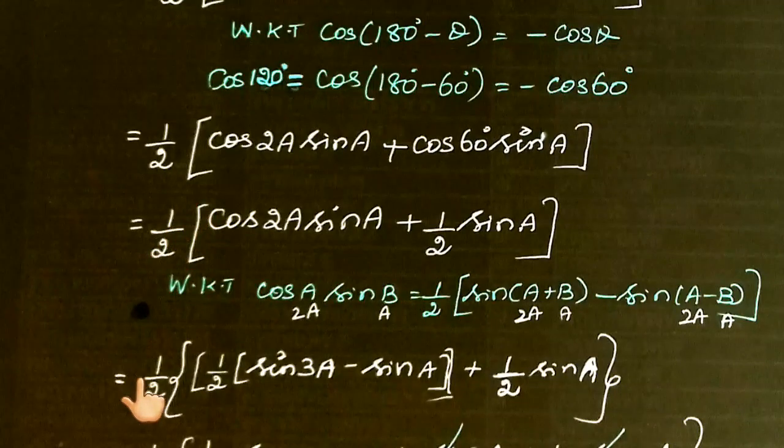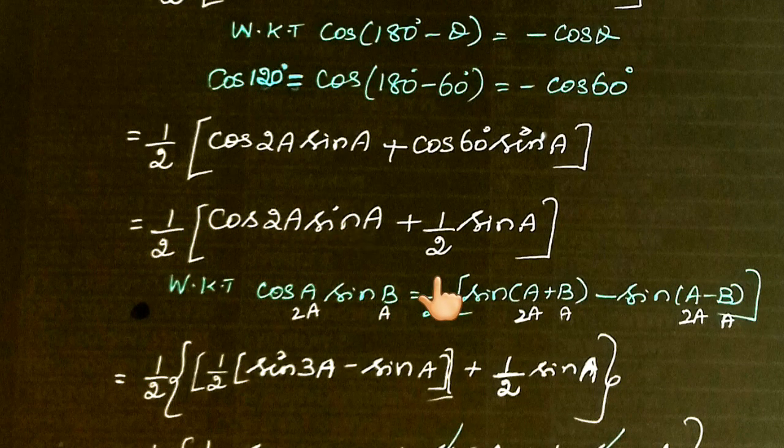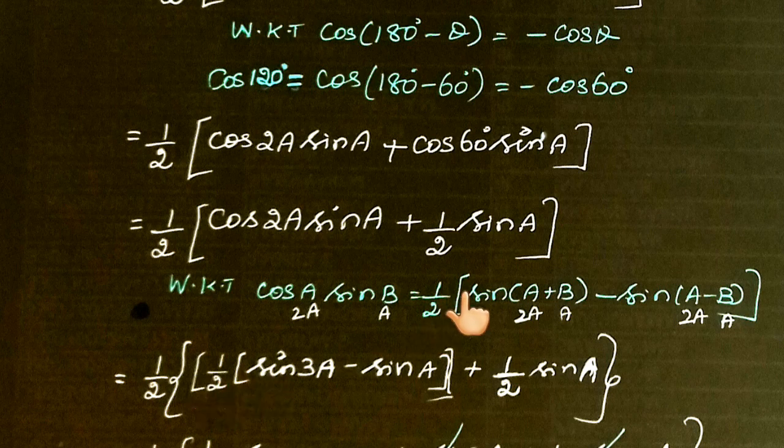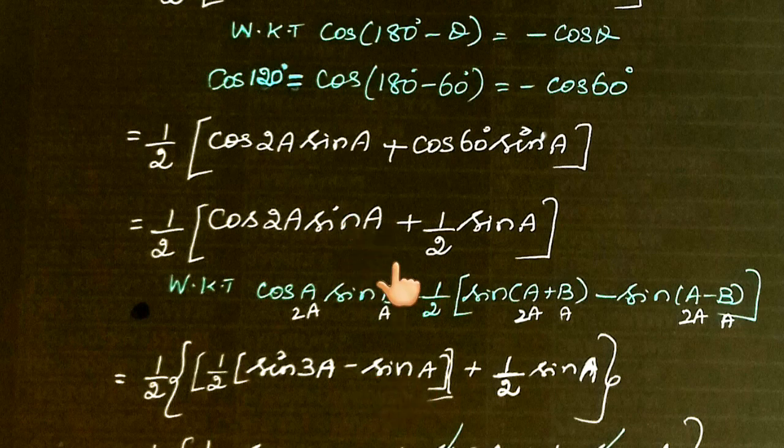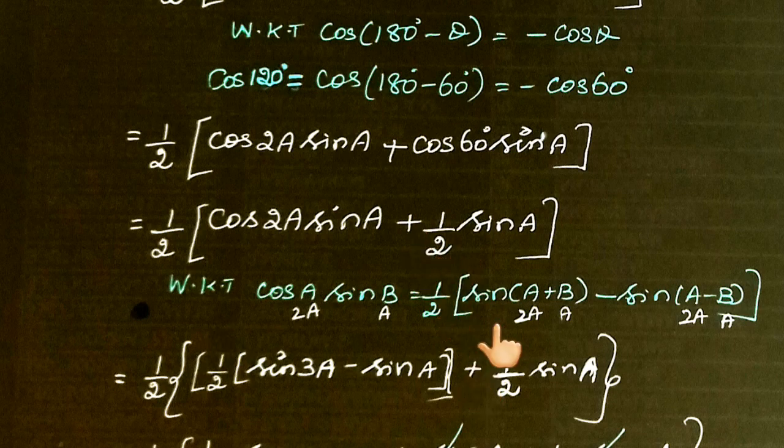Substituting: 1/2{1/2[sin(3A) - sin(A)] + 1/2 sin(A)}. Distributing the 1/2: 1/2[1/2 sin(3A) - 1/2 sin(A) + 1/2 sin(A)].